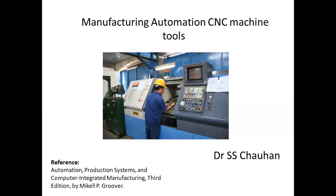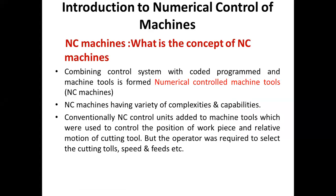Welcome back to the lecture series on Automation and Robotics. Today we are going to discuss the use of CNC machine tools in manufacturing automation. Numerical control machines were first introduced and can be defined as a form of programmable automation in which the process is controlled by numbers, letters, and symbols. In CNC machines, we use a program called an instruction program, which changes when the work part changes without making appreciable changes in the production equipment.